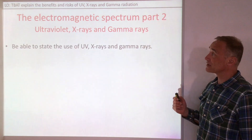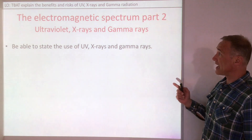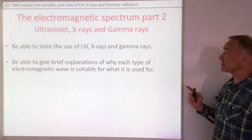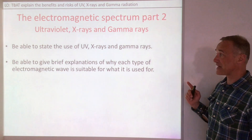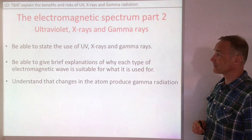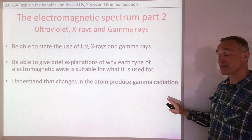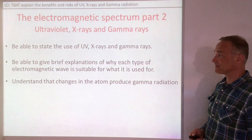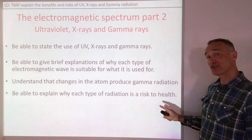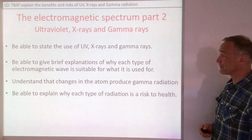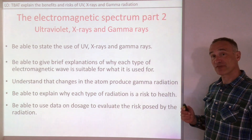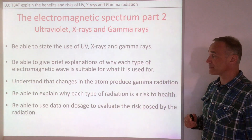By the end you'll be able to state the use of UV, x-rays and gamma rays. You'll be able to give brief explanations of why each type of electromagnetic wave is suitable for what it's used for. You'll understand that changes in the atom produce gamma radiation. You'll be able to explain why each type of radiation is a risk to health, and use data on dosage to evaluate the risk posed by each type of radiation.